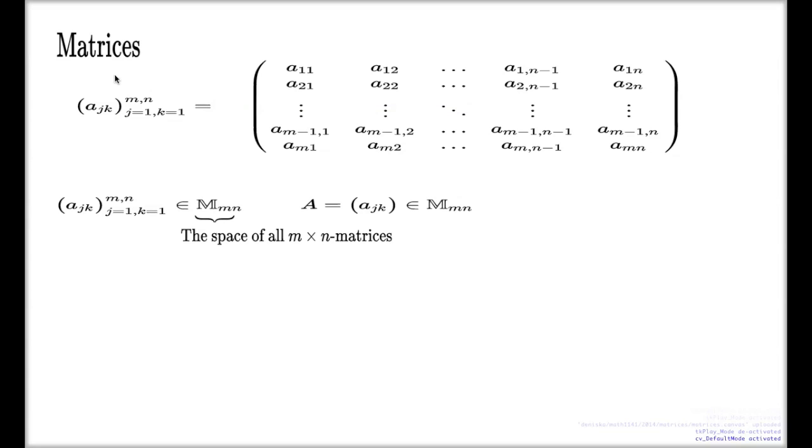This depends on the context a lot. If you can figure out from the context how many rows you have or how many columns you have, in your notations, you can drop the explicit mentioning of this information.